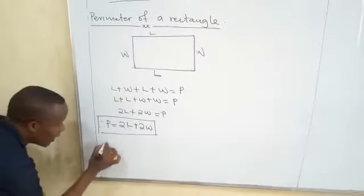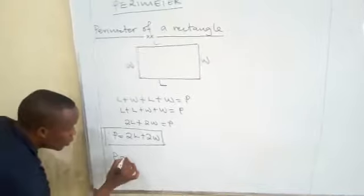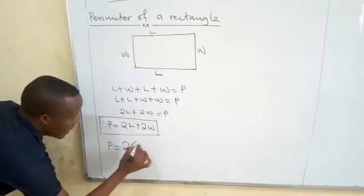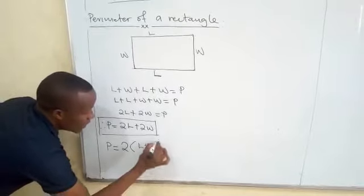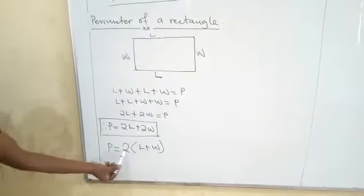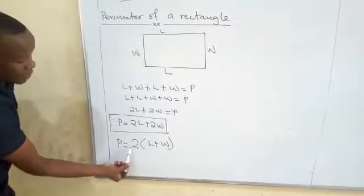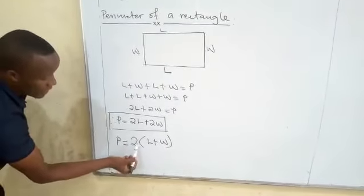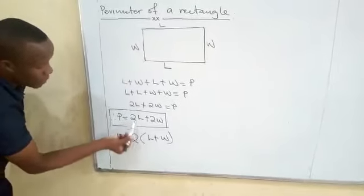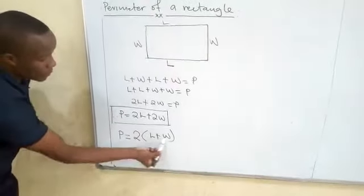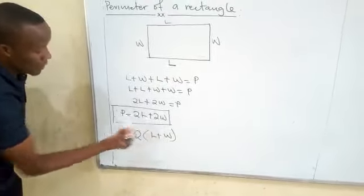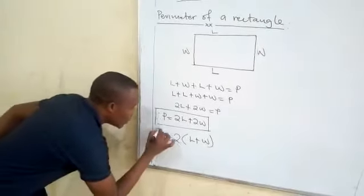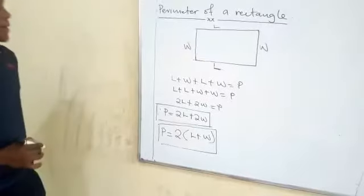We can also say perimeter of a rectangle is equal to two, in the bracket, length plus width. When you multiply, two times length gives you two lengths, because this bracket means there is a multiplication sign here. Then two times width gives you two widths. Therefore we can also use this formula to find the perimeter of a rectangle.